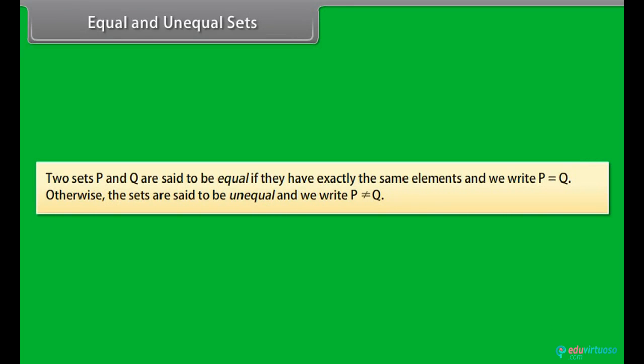Equal and unequal sets. Two sets P and Q are said to be equal if they have exactly the same elements and we write P equals Q. Otherwise, the sets are said to be unequal and we write P is not equal to Q.